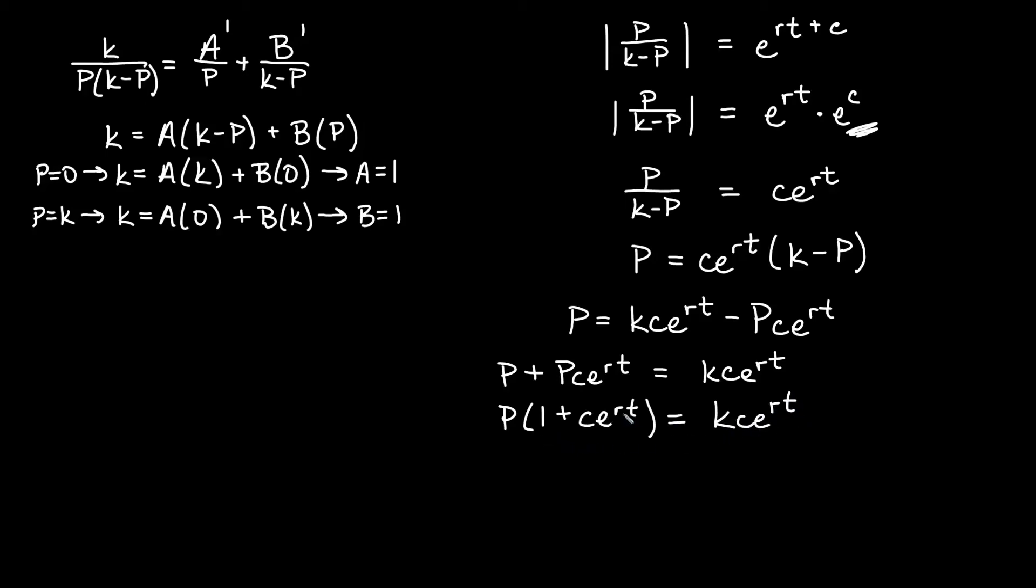And now I can just divide by this in parentheses on both sides. So we'll get P is equal to kc e to the rt all over one plus c e to the rt. Now we can leave it this way. It's solved for P, but I'm going to go ahead and make one more adjustment to this so that it looks more like we see it normally. I'm going to go ahead and take each term in my expression here, and I'm going to divide by c e to the rt.